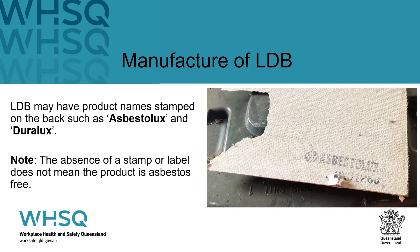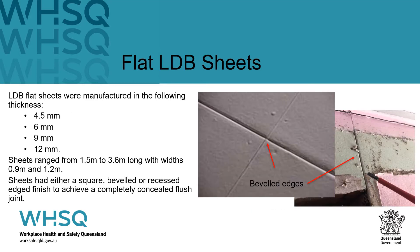LDB was manufactured and sold under a number of product names. Two of the most common LDB product names are Asbestolux and Duralux. LDB was manufactured in a range of thicknesses: 4.5, 6, 9, and 12 millimetres.